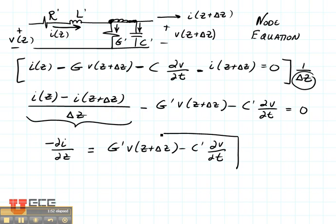And this is the second telegrapher's equation. So we use these two equations together in order to calculate the voltage and current on the transmission line.